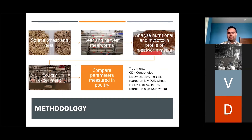For our experiment, we sourced wheat that was less than one part per million DON and approximately 30 parts per million DON. We reared and harvested mealworms which we then froze, dried and then ground into mealworm meal. We analyzed the nutritional and mycotoxin profiles of the mealworm meals and then we had our poultry experiment where we raised 75, later reduced down to 60, Ross 708 male broilers which were fed one of three diets.